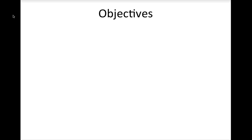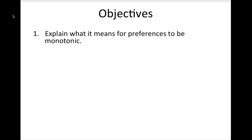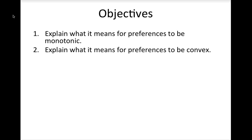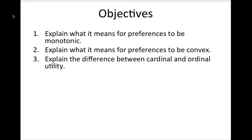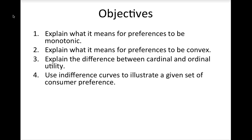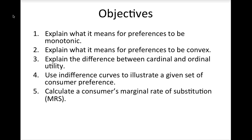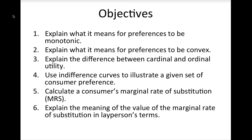By the end of this chapter, you should be able to do the following things. First, you should explain what it means for preferences to be monotonic, what it means for preferences to be convex, and you should be able to explain the difference between cardinal and ordinal utility. Next, you should be able to use indifference curves to illustrate a given set of consumer preferences. And you should be able to calculate a consumer's marginal rate of substitution using an indifference curve, and explain what it means in layperson's terms.